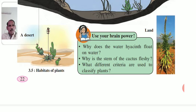What different criteria are used to classify plants?